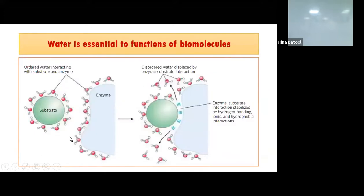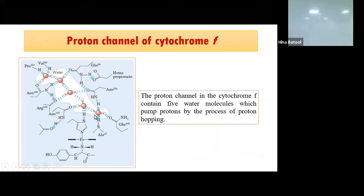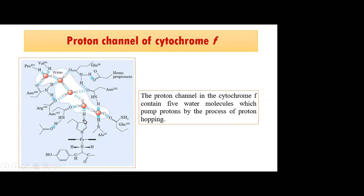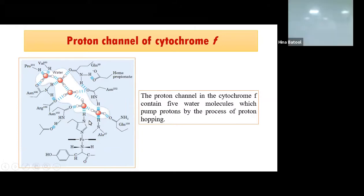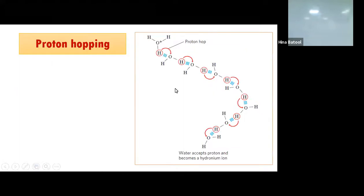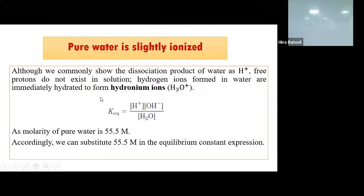We learned that enzyme-substrate interactions play an important role in biological systems. After that, we had to discuss the ionization of water — that in pure water, hydrogen and hydroxide ions are present. For that, first of all, we have an equilibrium constant for the chemical reaction. We derived that K-equilibrium is actually the ratio of the concentration of products and reactants.